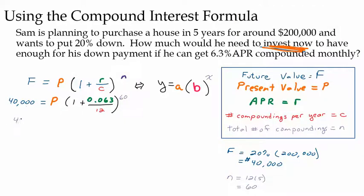So let me write this out. We're going to end up doing 40,000 divided by 1 plus 0.063 over 12, that quantity to the 60th power. And that's going to be our present value.